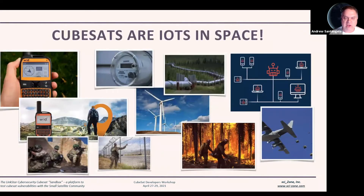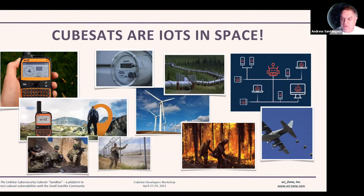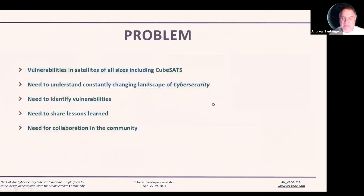Another way to look at CubeSats is they are the Internet of Things in space. As you see in this summary picture, we have Spot X talking with satellites where you can send messages and get your location. CubeSats can be used for pipeline monitoring, power grids, windmill tracking. You can use them for tracking people working in the field, fighting forest fires, or payloads being deployed from aircraft, or even used by the warfighter. The bottom line is CubeSats are simply an Internet of Things in space. But there is a problem with all this growth — vulnerabilities in satellites of all sizes, including CubeSats, exist.